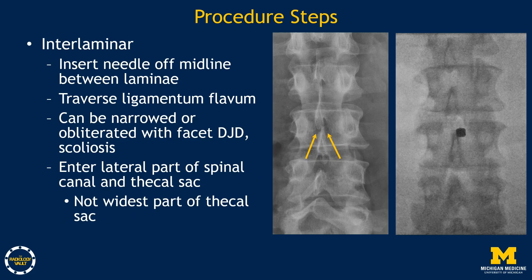With the interlaminar approach, the needle is inserted off midline between the laminae of adjacent vertebrae. The relatively thinner ligamentum flavum is traversed. This space can be narrowed or obliterated by degenerative change or scoliosis. Additionally, with this route, the lateral part of the spinal canal and thecal sac are entered, which are not the widest portion.